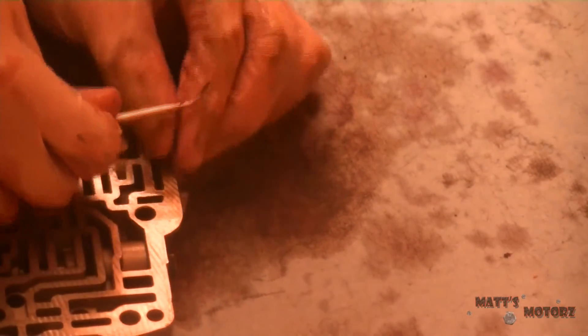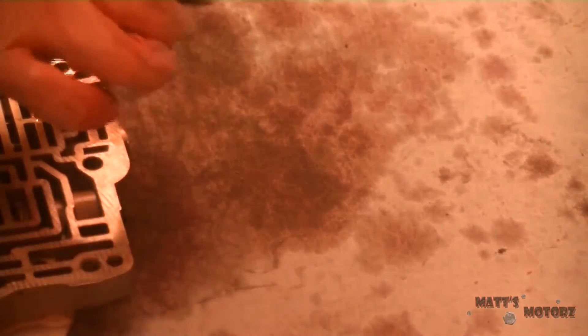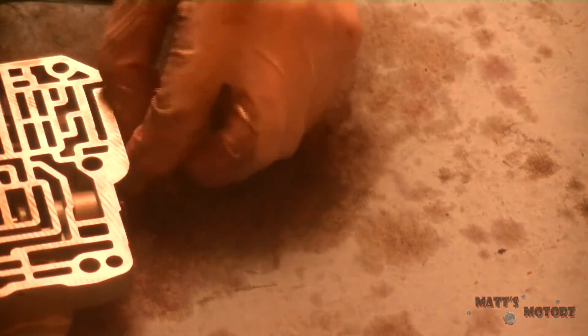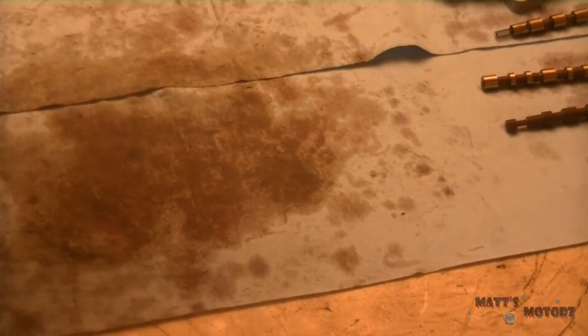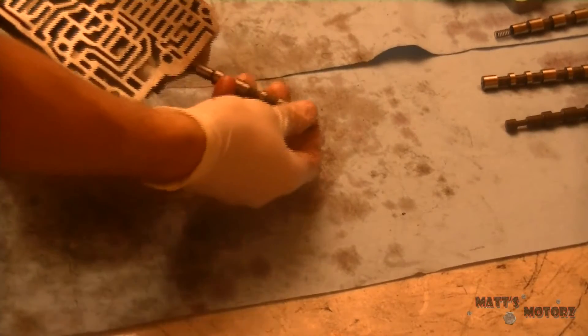Next is the 3-4 shift valve. Take out this little hook here. Pull out the cap. And there's the valve.